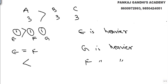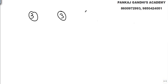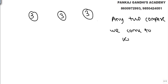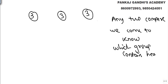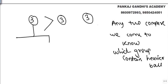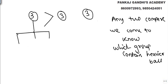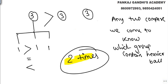So to summarize: nine balls given, we make groups of three. Compare any two groups to find which group contains the heavier ball — that's one use of the balance. Then split that group of three into individual balls and compare two of them — that determines the heavier ball.